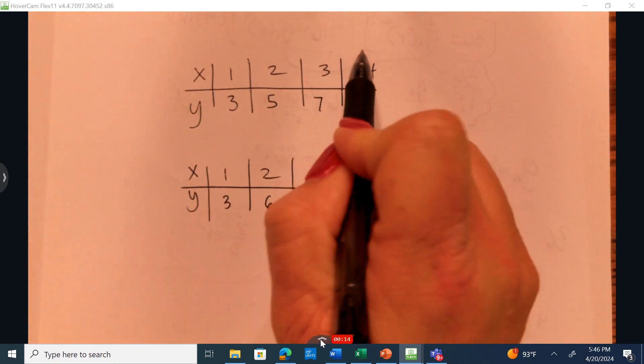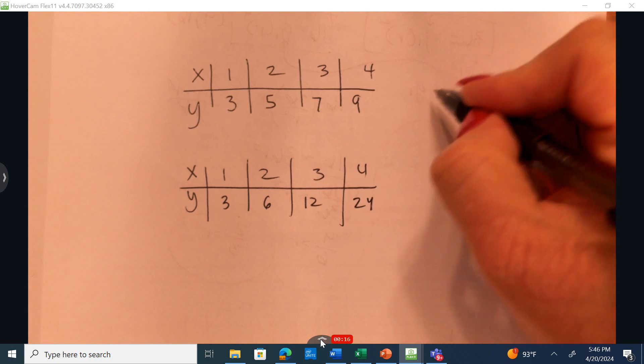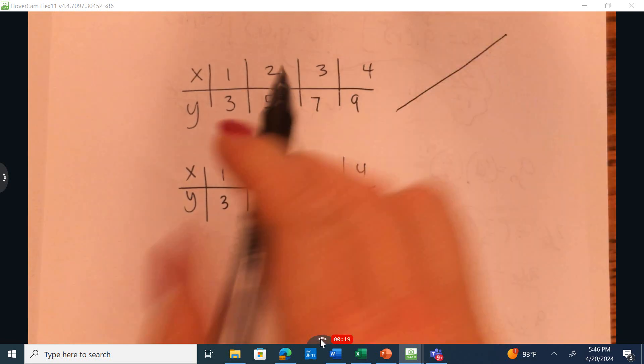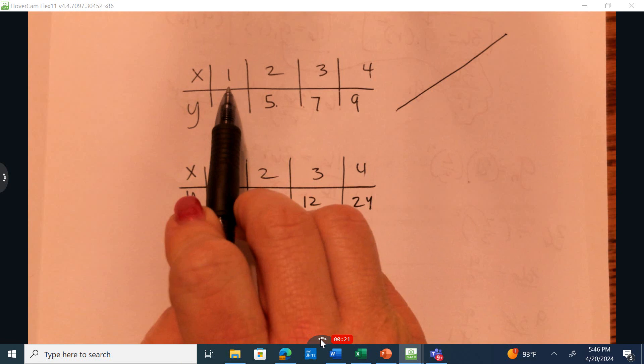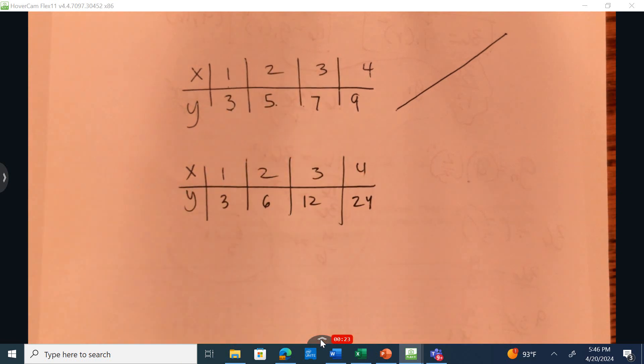This is an example of linear. And if I graphed it again, it'd be a straight line. It'd be consistent. Your x's and your y's are consistently going up by 2. The x's on the bottom are going up by 1. Simple enough.